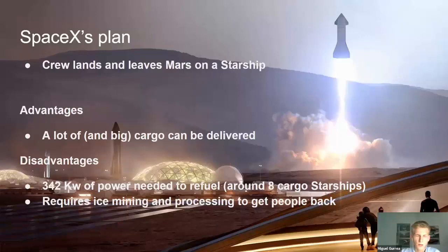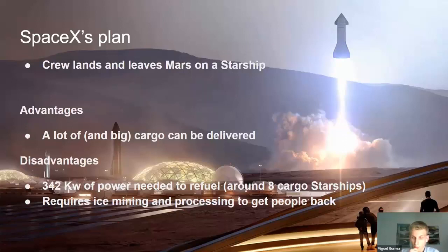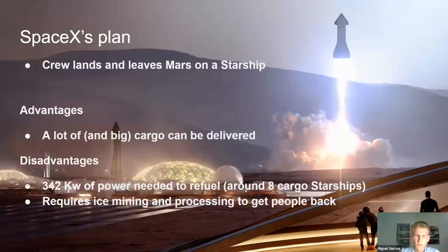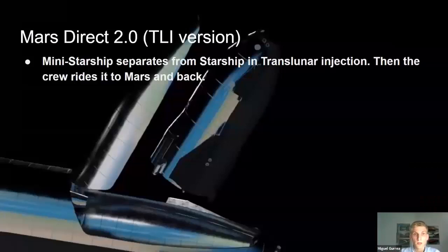The main disadvantage is that it requires a lot of power to refuel — 342 kilowatts according to Dr. Zubrin's calculations — and estimates suggest around eight cargo Starships worth of solar panels to install. It also requires ice mining and processing to get people back. While it's 19th-century industrial technology, many things could go wrong: they might not find water, it could be contaminated, or machinery could malfunction. That's a big risk factor.